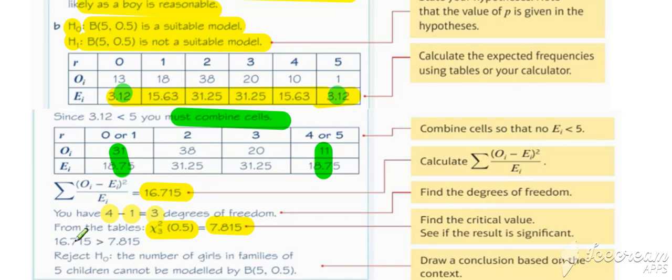And then once we've got to this stage, we're performing the test as normal. So the only thing that's different if you start off with a known distribution is you need to use that distribution to work out the expected. Once you've got the expected, you're then just doing the chi-squared goodness of fit test as normal.